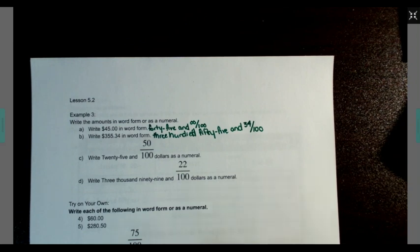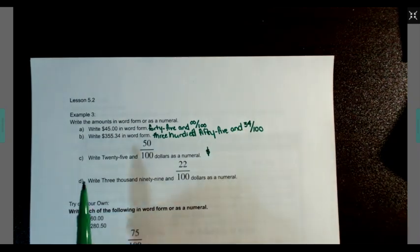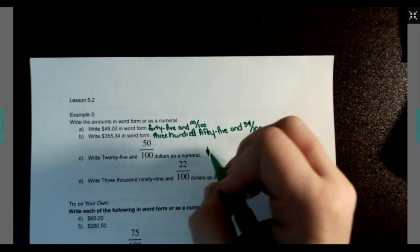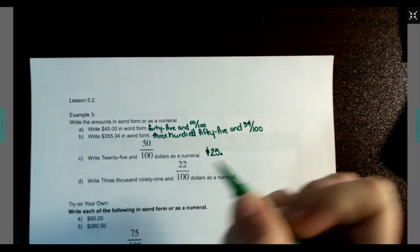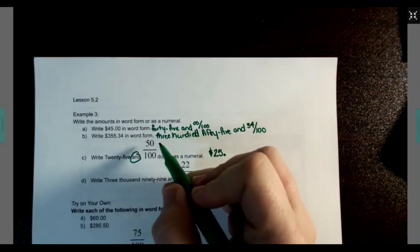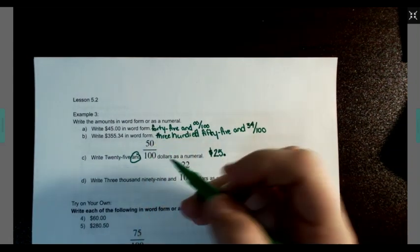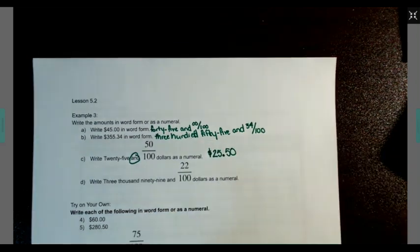Let's take a look at C. Write 25 and 50 over $100 as a numeral. So 25 is 25 decimal. This and represents my decimal, okay? And we always write the numerator. So 50 would be my change.